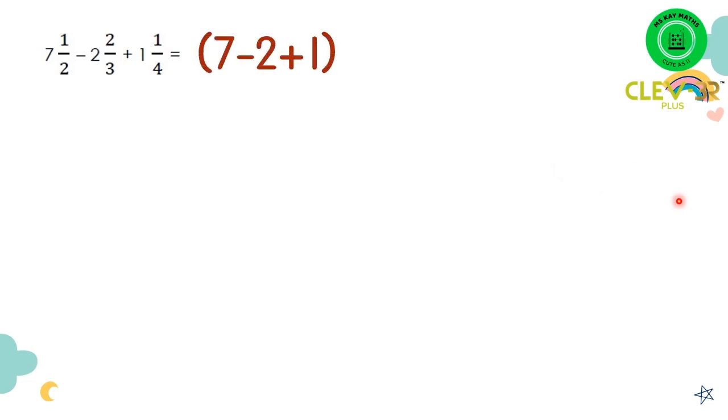Okay, let's do the whole number first. So we have 7 minus 2 plus 1, and we take the proper fractions 1/2 minus 2/3 plus 1/4.